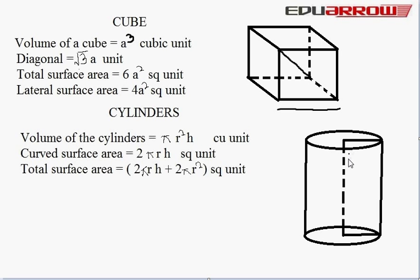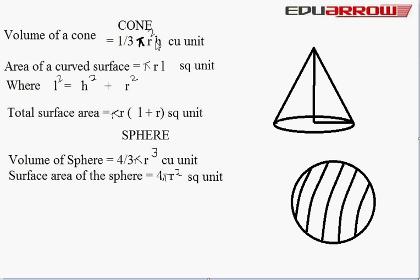Now we read cone. Volume of the cone is equal to (1/3)πr²h cubic unit. Area of curved surface is equal to πrl square unit, where l is the lateral height of the cone and h is the perpendicular height. Total surface area is equal to πr(l + r) square unit.